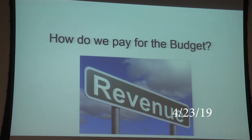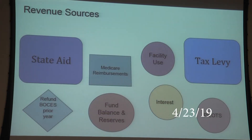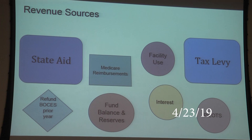Another question is: how do we pay for the budget? Revenue sources are a good way to talk about that. The two biggest are state aid and the tax levy. State aid goes through the governor's run and then we get the final budget. The tax levy is a finite number based upon all other revenue we get, and it has to fall within the tax cap.